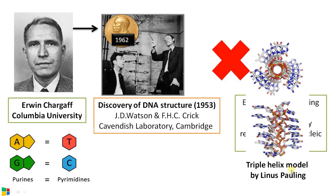Linus Pauling's triple helical model was first disproved by the X-ray crystallographic data of Rosalind Franklin, and further confirmed by Erwin Chargaff's rule.